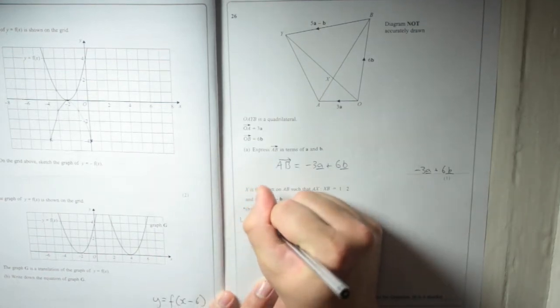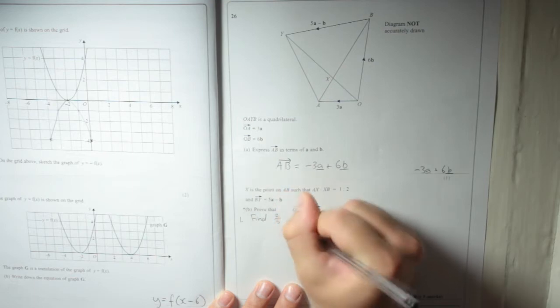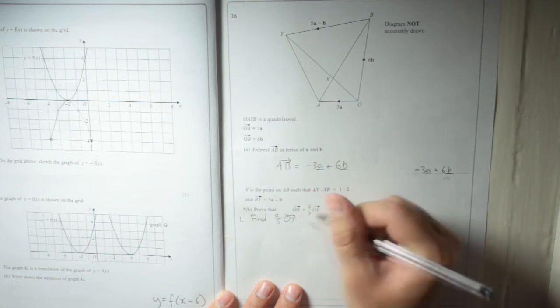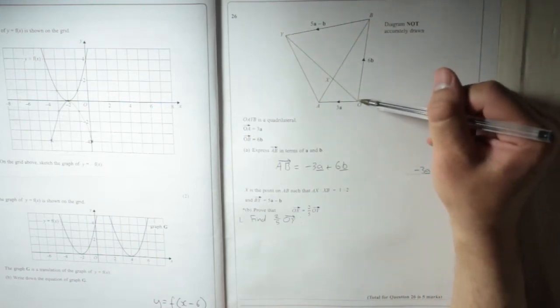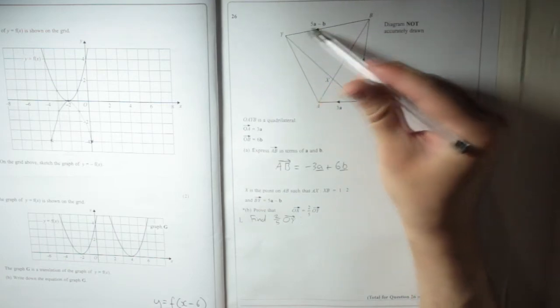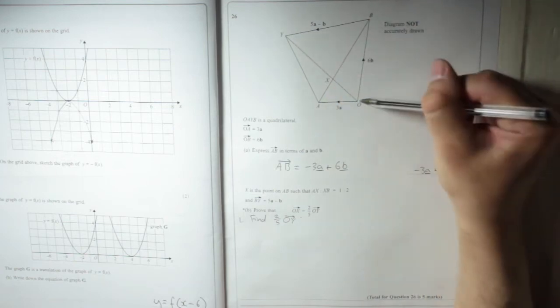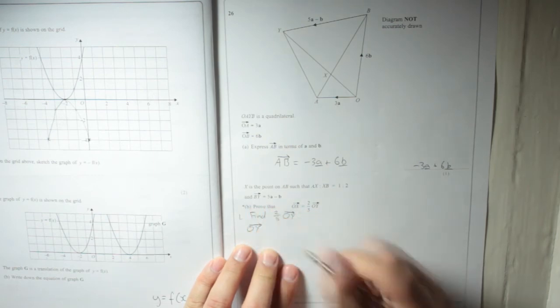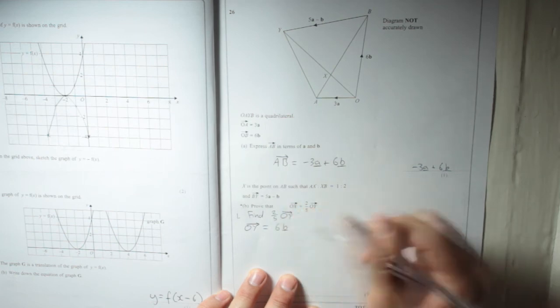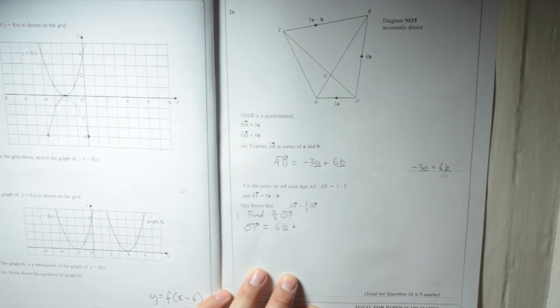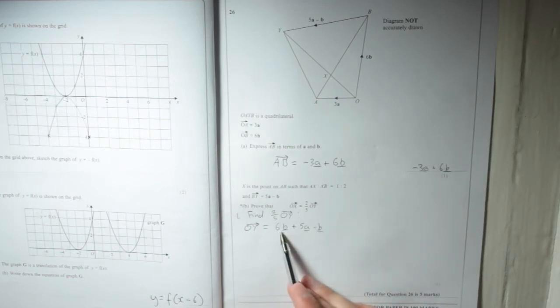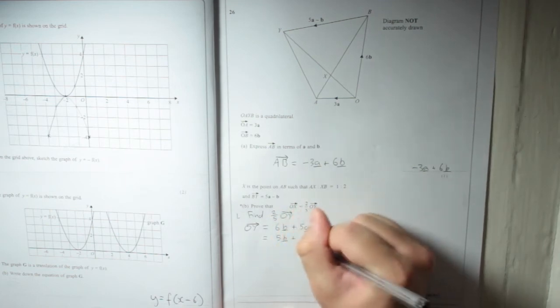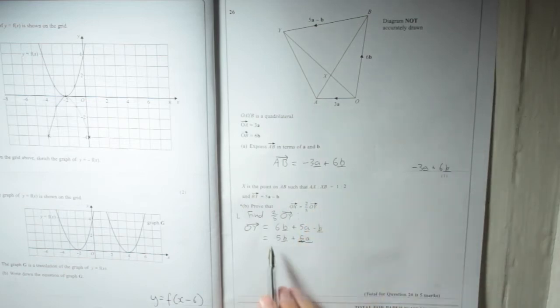OK, so first of all, we're going to find OY, or 2 fifths of OY. So there's O, there's Y. To get from O to Y, following paths that we already know, I would go up 6B and along 5A minus B. So OY is equal to 6B plus 5A minus B. Now, when you gather your like terms, or simplify it, you end up with a 6B, take away B, that gives you a 5B, and a 5A. So 5B plus 5A.